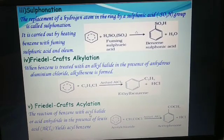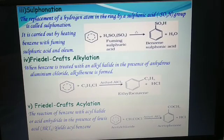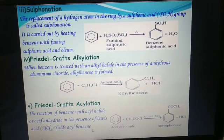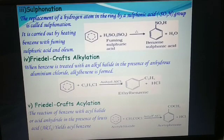Friedel-Crafts acylation: the reaction of benzene with acyl halide or acid anhydride in the presence of Lewis acid AlCl3 yields acyl benzene. With the help of this reaction, an acyl group, that is COCH3, can be introduced in the benzene ring.